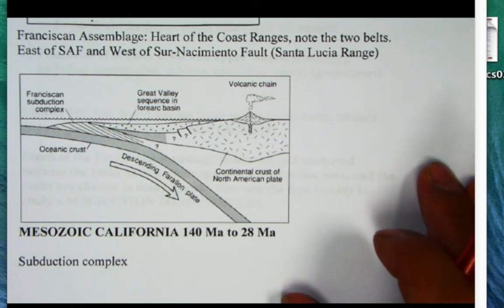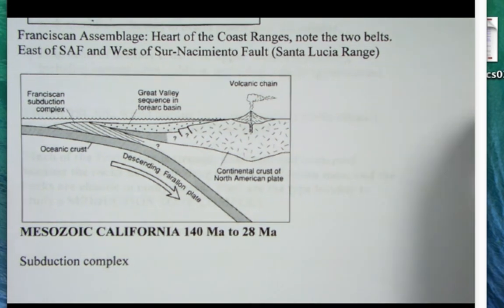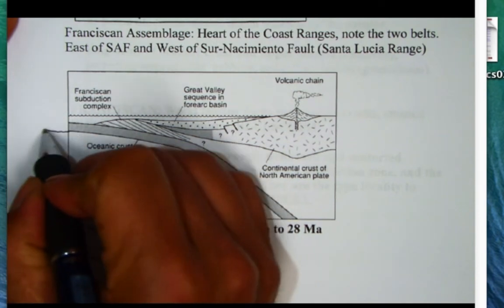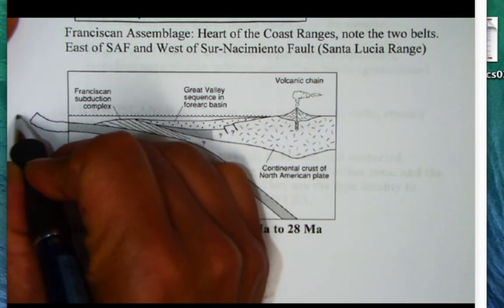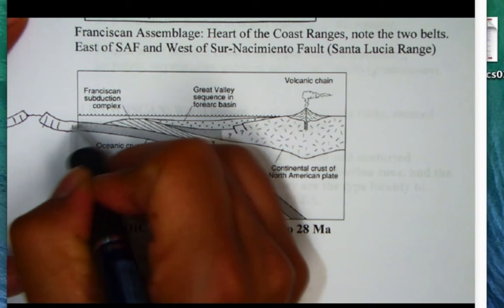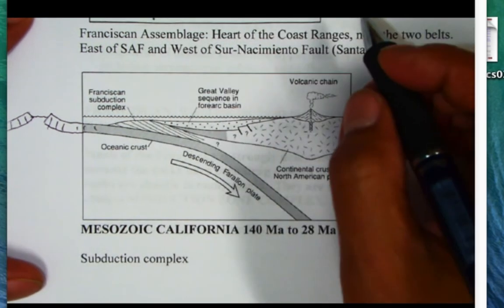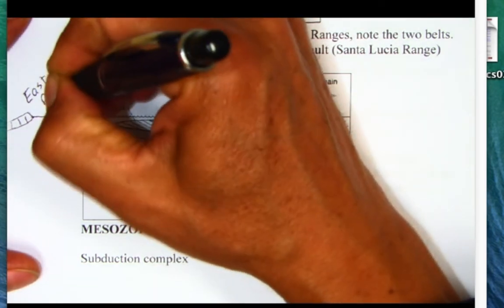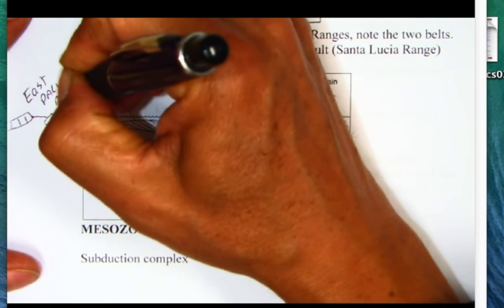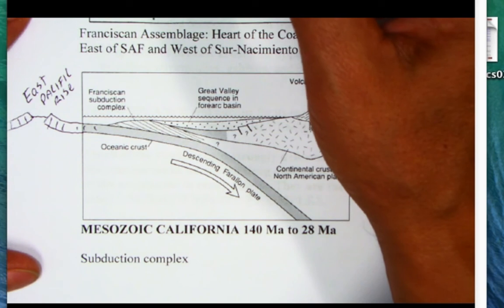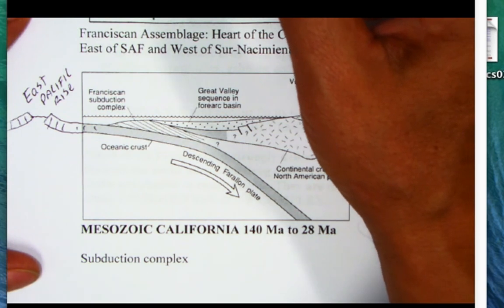If you think about what Mesozoic California was like, we had a subduction zone complex, and offshore there was a mid-oceanic ridge with seafloor spreading. During this Mesozoic time, this was the East Pacific Rise — a mid-oceanic ridge still offshore of South America and central Mexico, which today turns into the Gulf of California and connects with the San Andreas Fault.